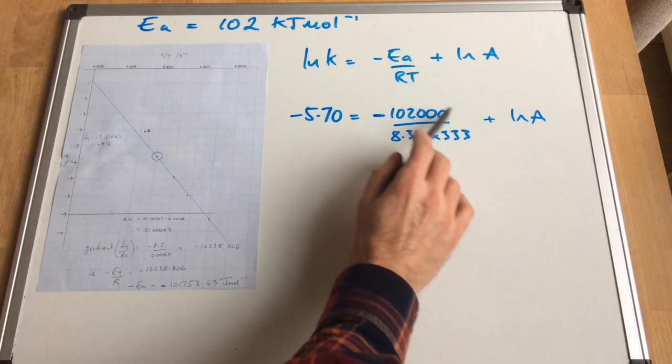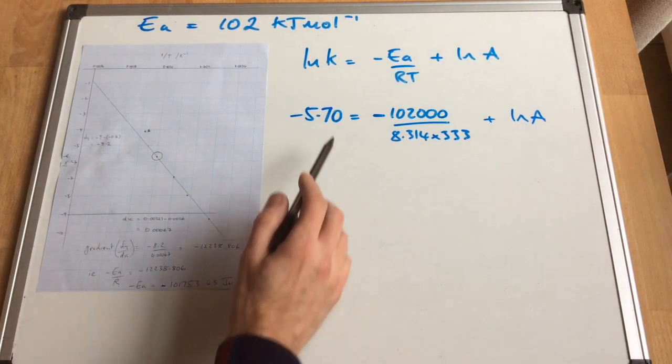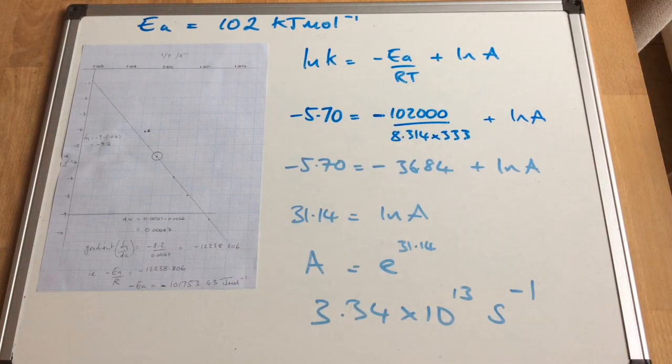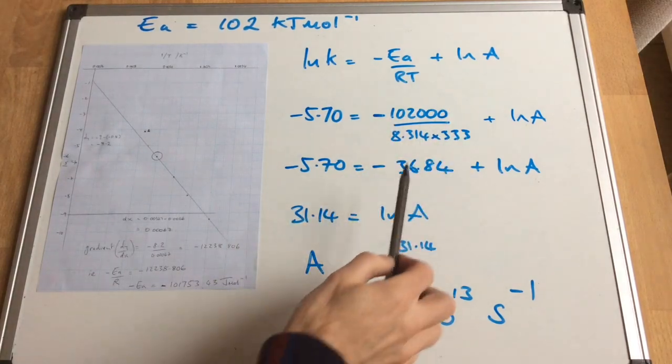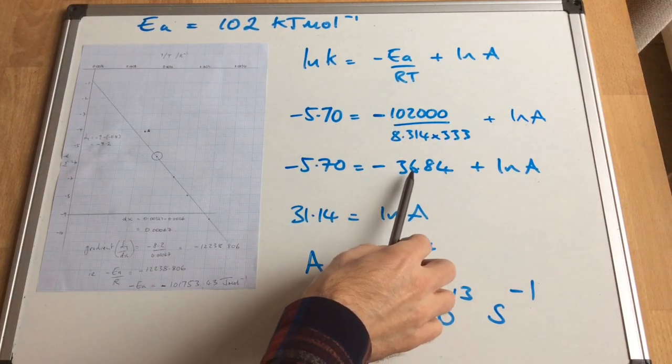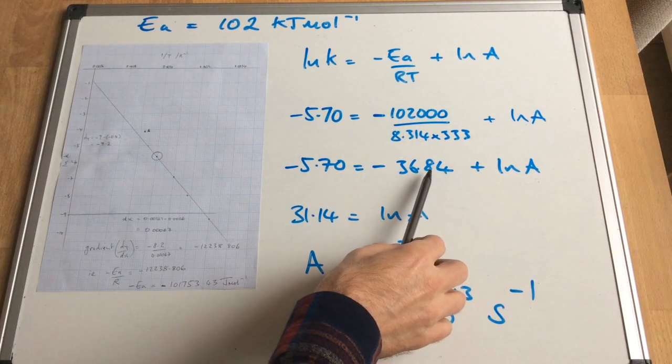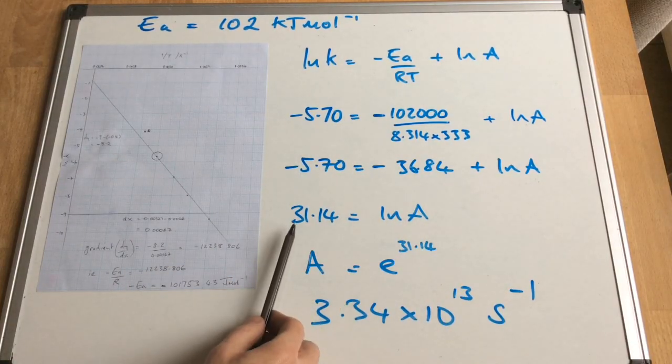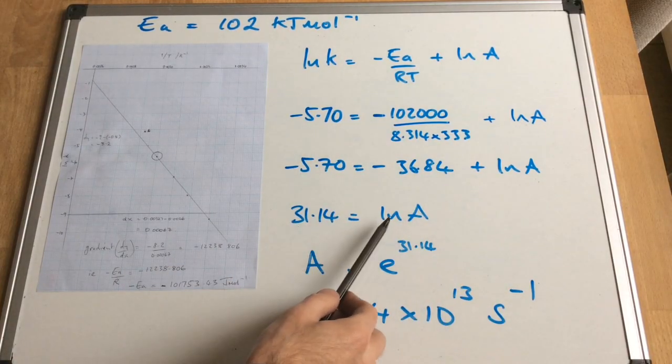So we'll tidy this up, and we'll hopefully be left with ln A. So you can see there's all my working out. So all of this here gives me a value of minus 36.84. So I'm taking that over to the other side, it becomes positive. So I get 31.14 equals ln A.